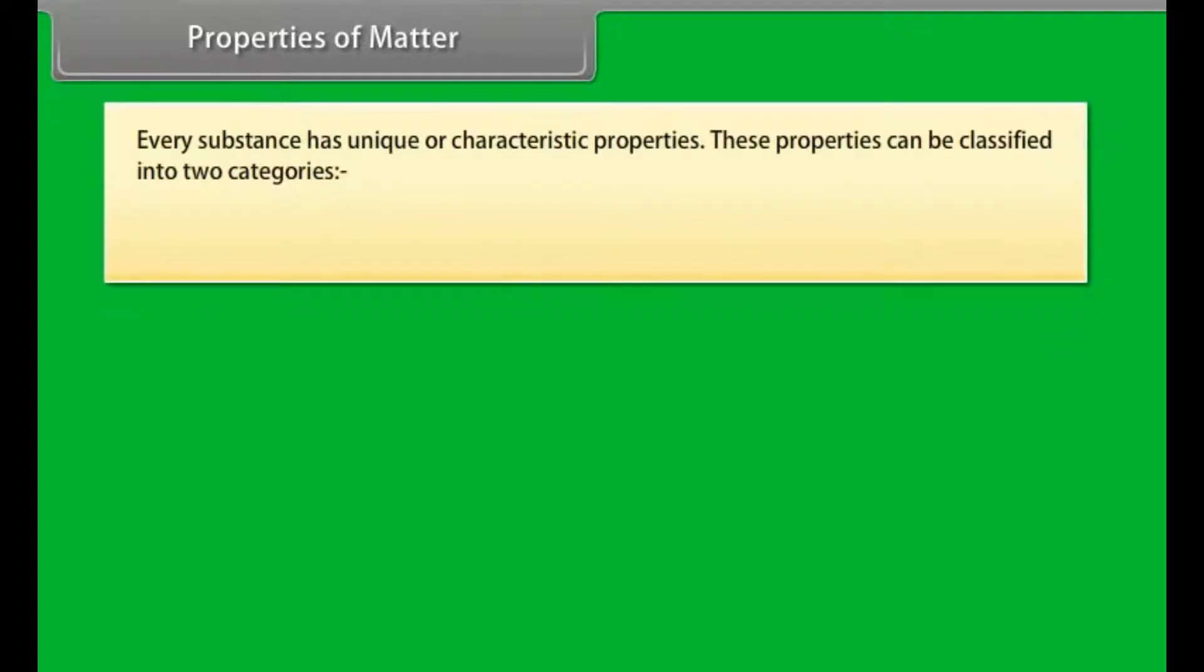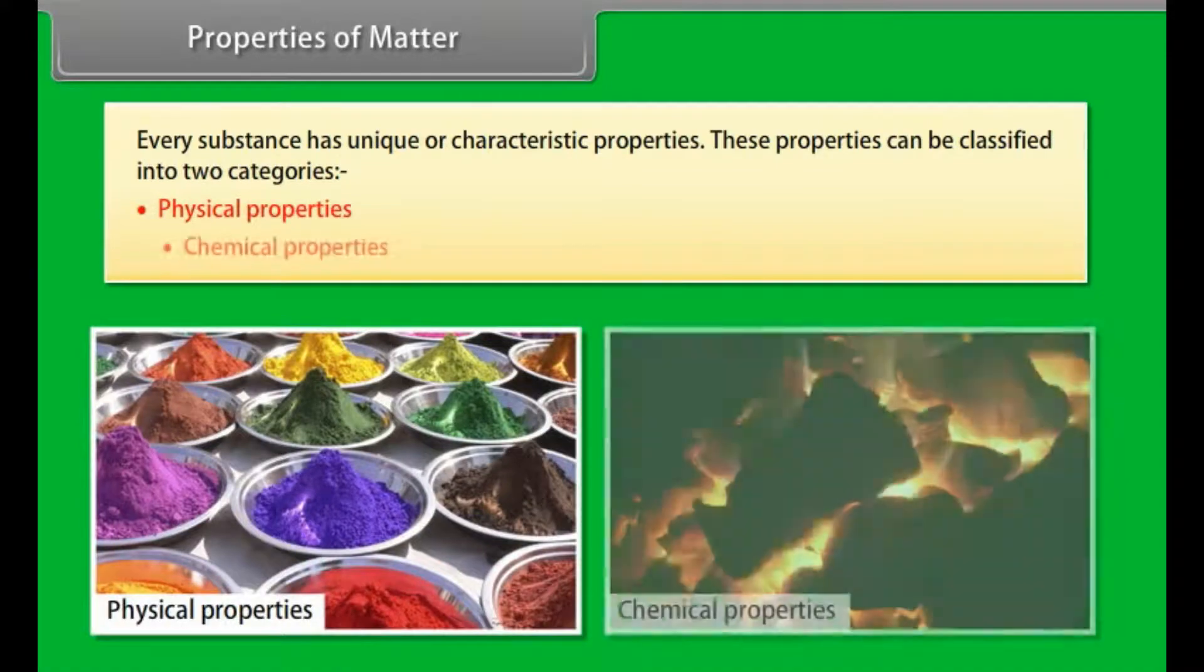Properties of Matter: Every substance has unique or characteristic properties. These properties can be classified into two categories: physical properties and chemical properties.